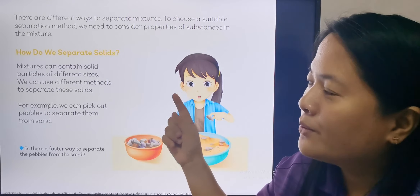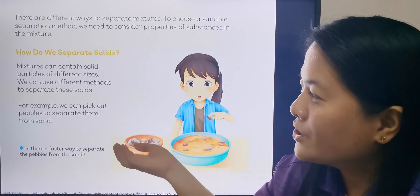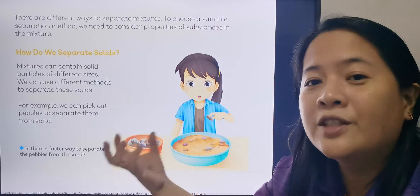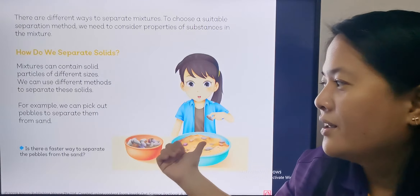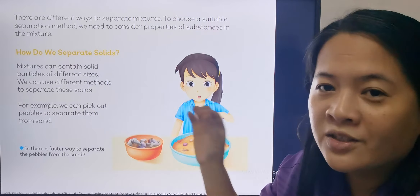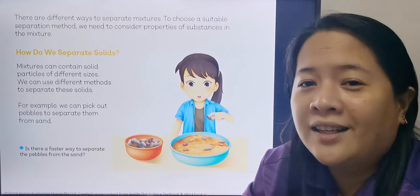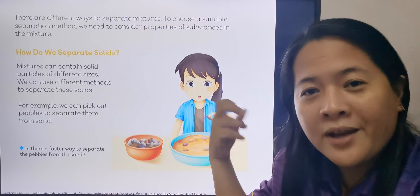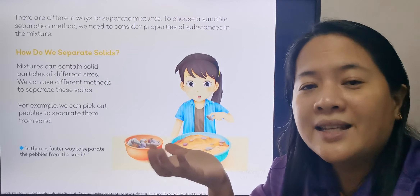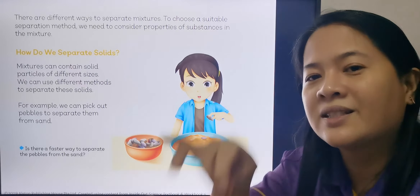So the first one is how do we separate solids. In Primary 5, we already studied about solids. Mixtures can contain solid particles of different sizes. Now if there are solids — the sand and the rocks — they are of different size, so you can differentiate them and use your hand to pick out. This technique is called hand picking. When you are eating mixed nuts and you don't like raisins or cashew nuts, you can just pick them out. This is a technique we use in our everyday life — hand picking.